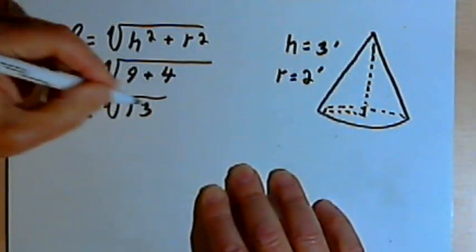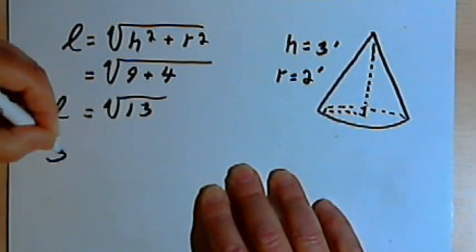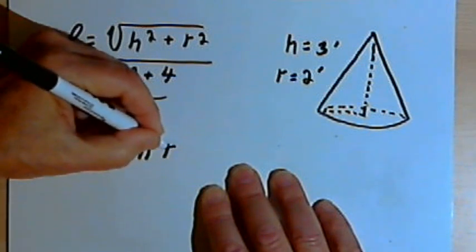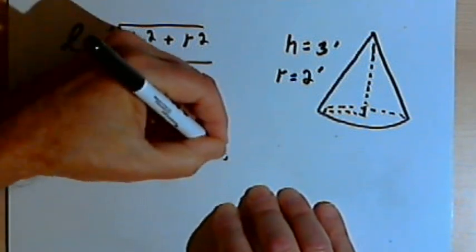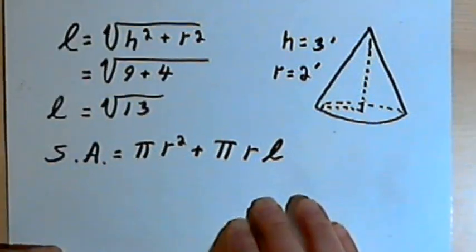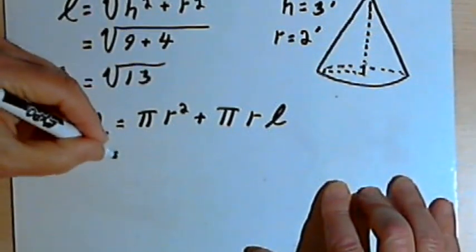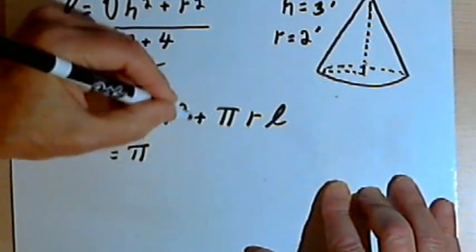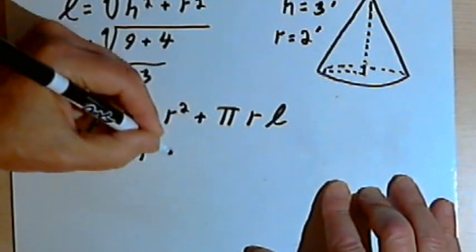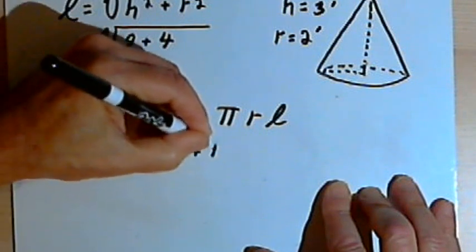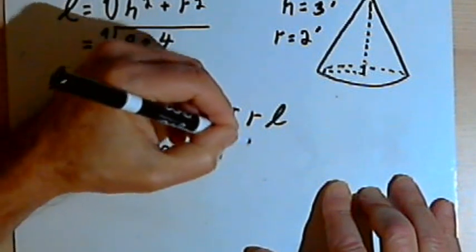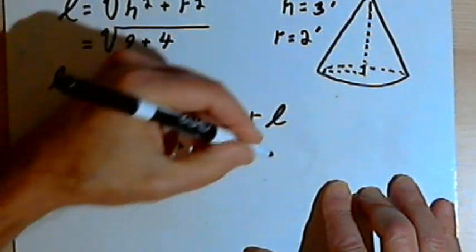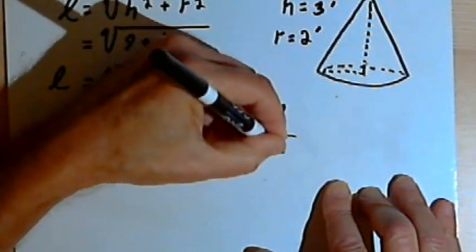And now we'll write the formula and plug in the numbers. So the surface area is pi R squared plus pi R L. R is 2. So that's going to be pi times 2 squared plus pi times the radius, which is 2, times L, which is the square root of 13.